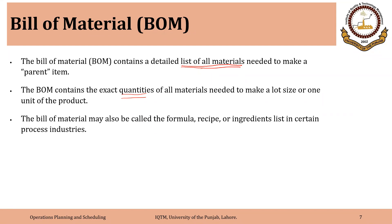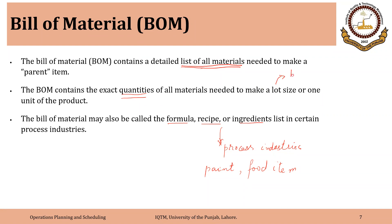Some formats of bill of materials include additional information beyond these two points. The bill of material may also have different names like formula, recipe, or ingredients — words more common in process industries, such as when making paint or a food item. In summary, the bill of material has at least two pieces of information: a list of materials and their quantities required to make one product or a lot, where a lot means a batch of a certain product or a single unit.